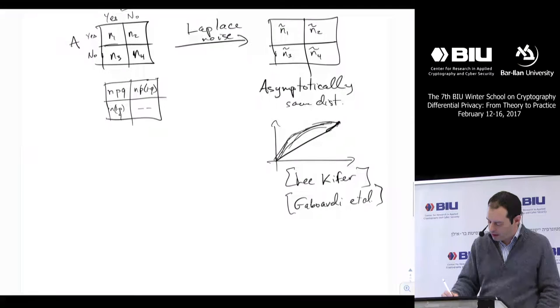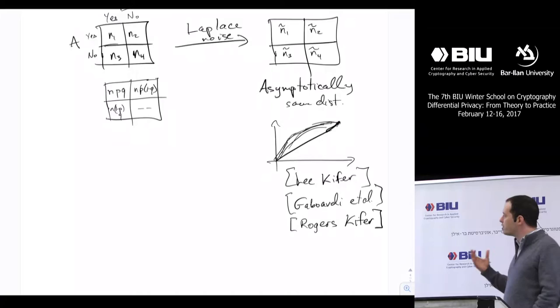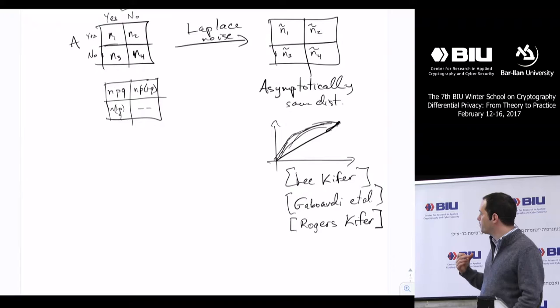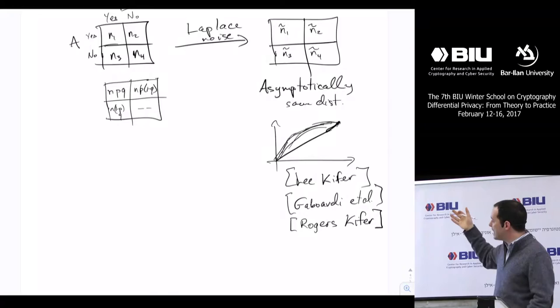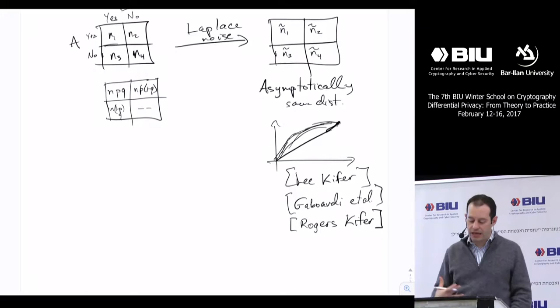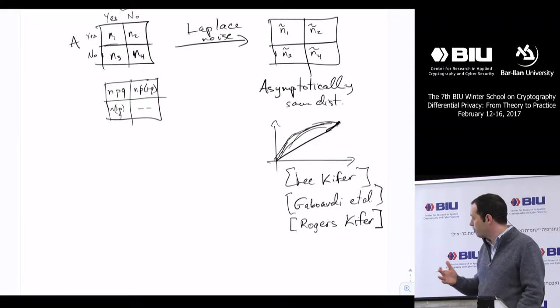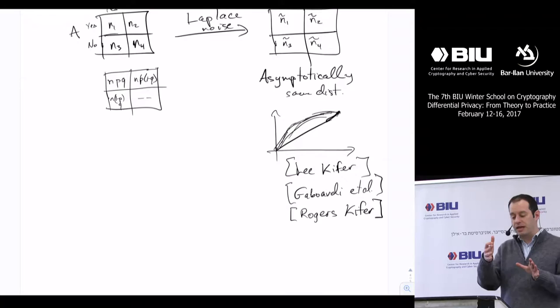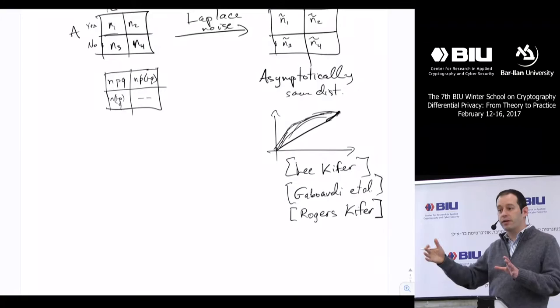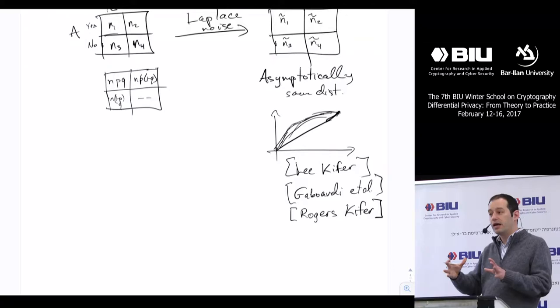These papers — also a recent paper by Rogers and Kiefer — look at how you would adjust the hypothesis test to take into account this extra noise, and to use not the distribution from the non-private setting but the actual noisy distribution. It turns out this is not always a trivial thing to do. With tests like this it's not super hard, but as the algorithms become more sophisticated — if we use private multiplicative weights or some of the optimization algorithms from yesterday — then we don't really have a good handle on how to think about these questions.